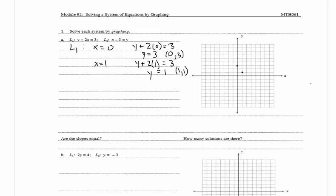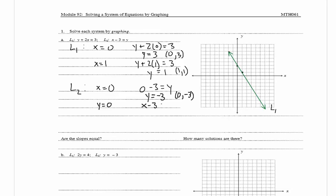Now I'm going to draw a line through those two points and label it L1. For L2, if x equals 0 then we have 0 minus 3 equals y, so y equals negative 3, giving the point (0, -3). And if y equals 0 then x minus 3 equals 0, so x equals 3, giving the point (3, 0).